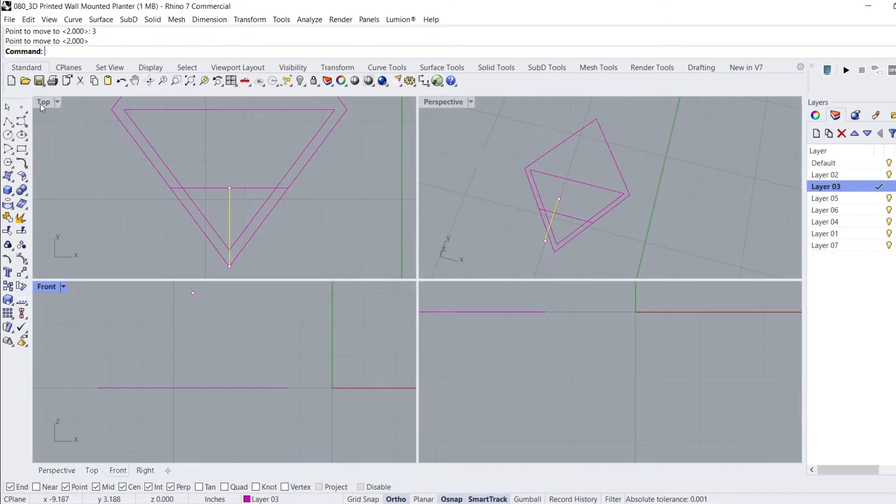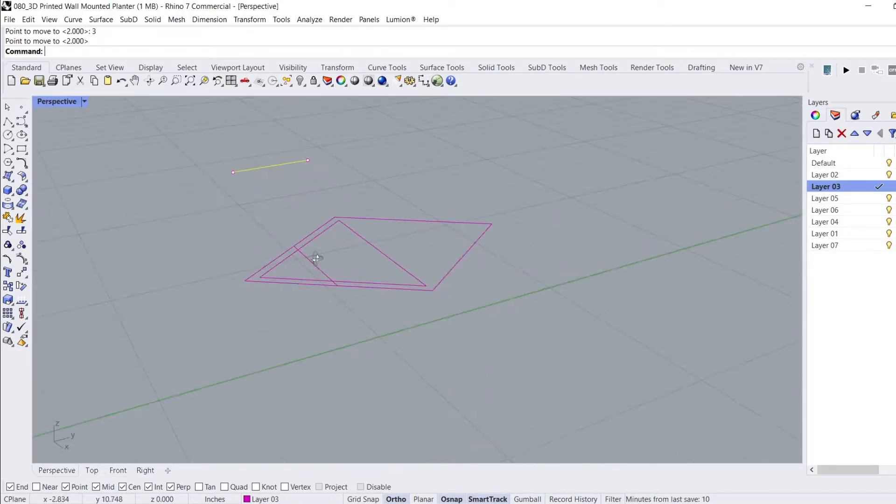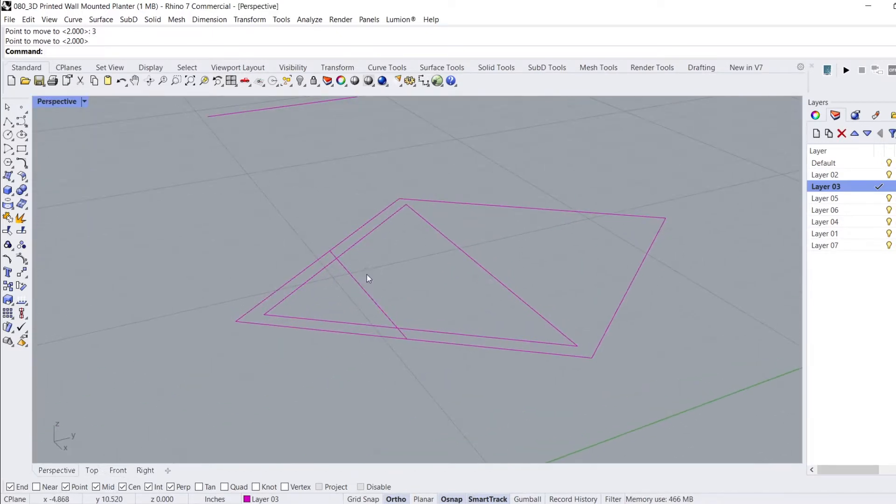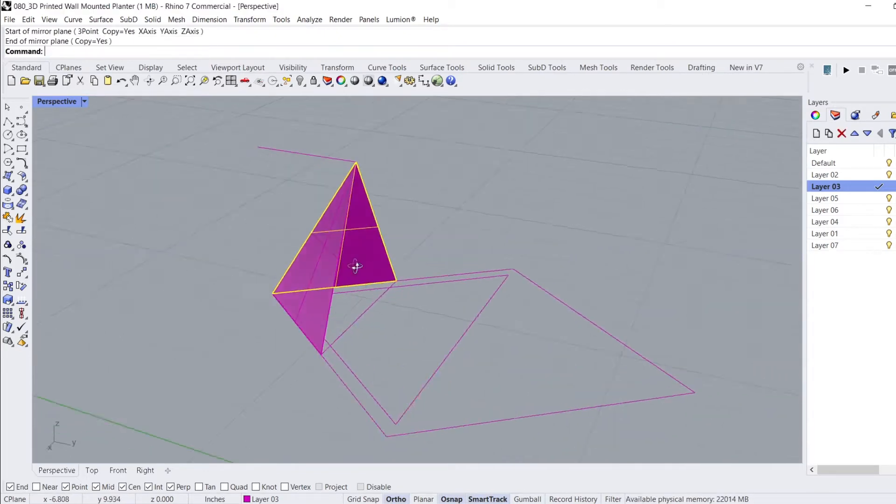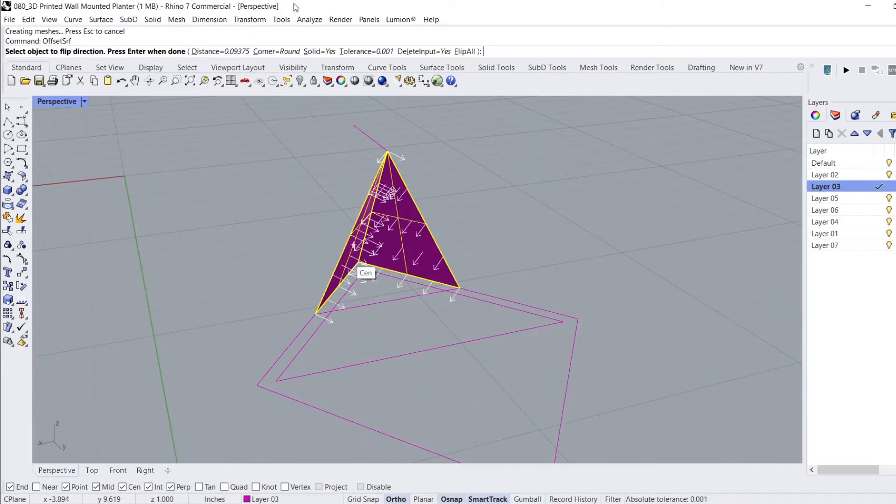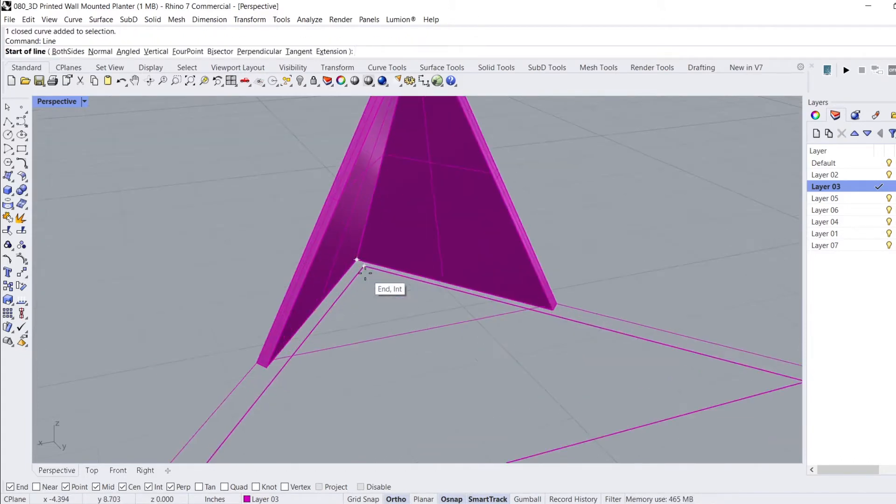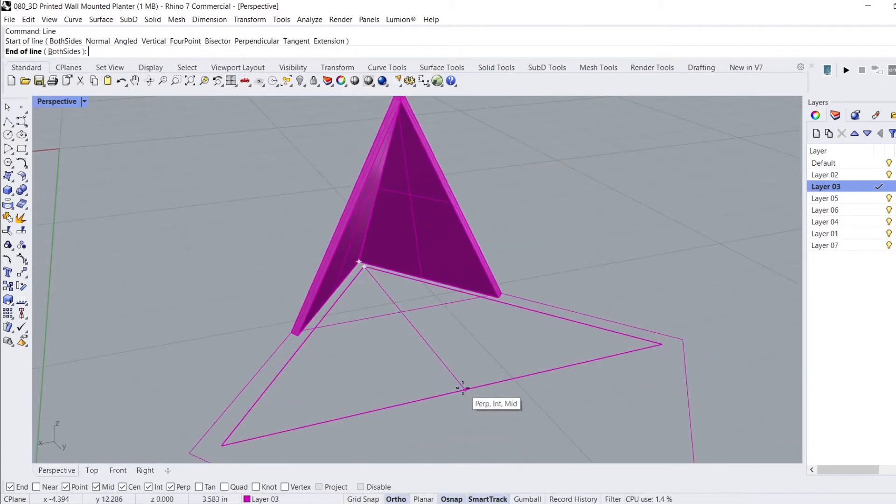I start by using the Line command to connect the end of the line that's up high to the base of the diamond and another from the same point on the line down to one of the side points of the diamond. This creates the overall shape of the drip tray, which we can turn into a surface using the Loft command and selecting both lines. With the surface created, I use the Mirror command to copy it over the center of the diamond. This creates the overall form, which we use the Join command to combine.